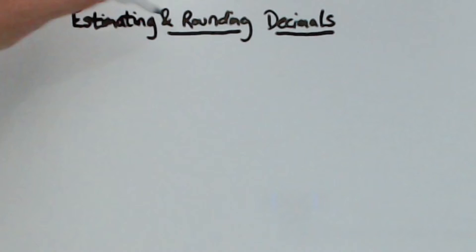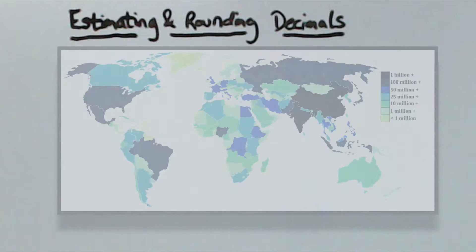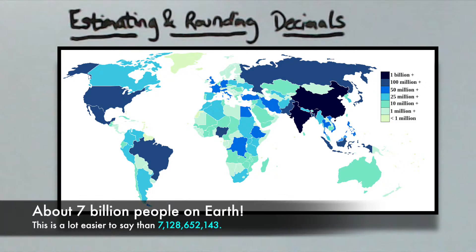The first important concept to understand in terms of estimating and rounding is why we do it. The reason we do it is to make the number a little easier to understand and communicate. A good example of this is the human population of the earth. There are about 7 billion people on earth. This is a lot easier to say than 7,128,652,143. The number 7 billion gets its point across well enough without having to worry about the smaller, less meaningful numbers.